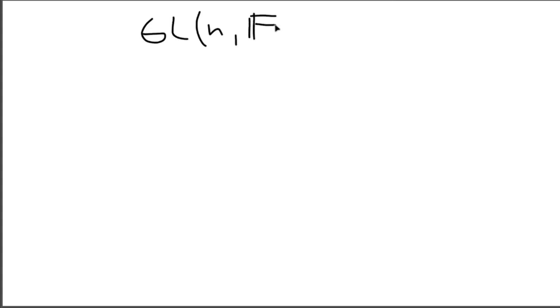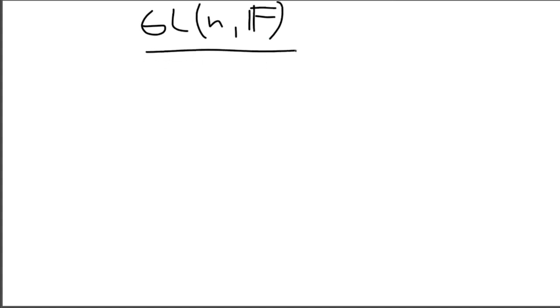In this video I will talk about something called the General Orthogonal Group. It is related to the General Linear Group, so basically this is a connection between linear algebra, group theory, and abstract algebra. The General Linear Group is defined with two parameters: matrices that are n-by-n in size over a field F, which can be the real numbers, complex numbers, or some field in general.